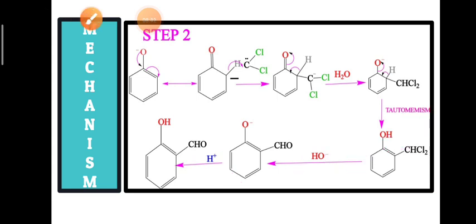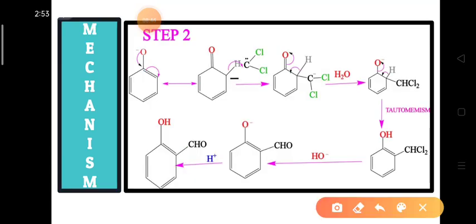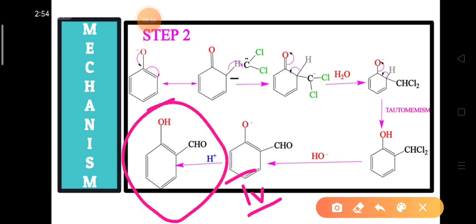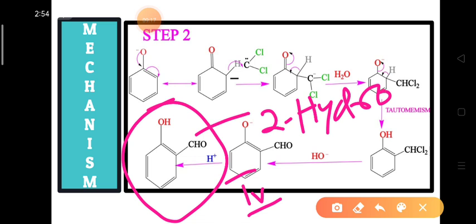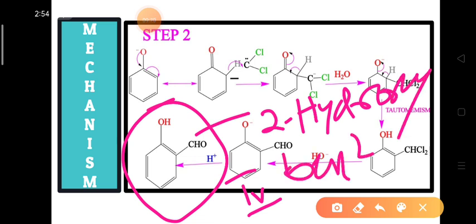This intermediate four takes the H+ ion from the solvent and forms the final product, salicylaldehyde. The IUPAC name for this product is 2-hydroxybenzaldehyde, while the common name is salicylaldehyde.